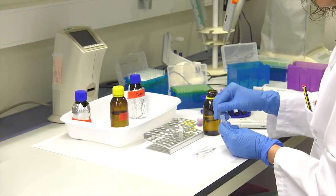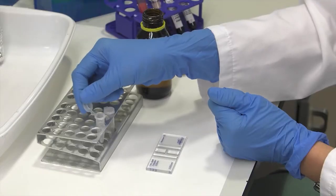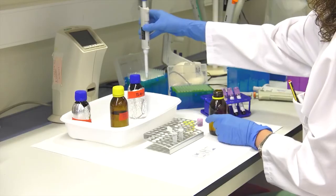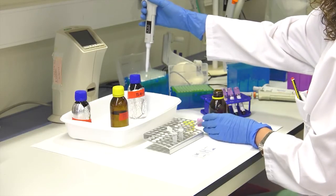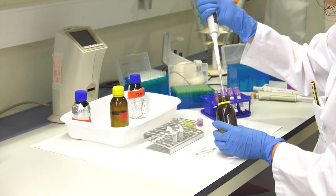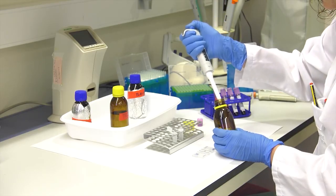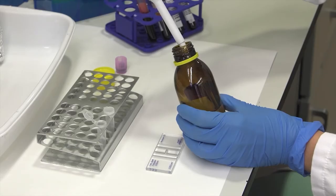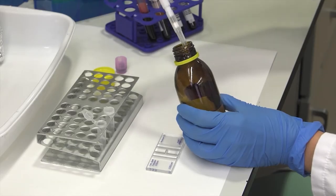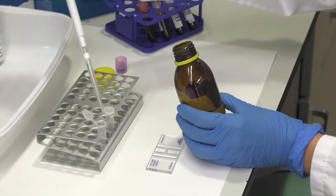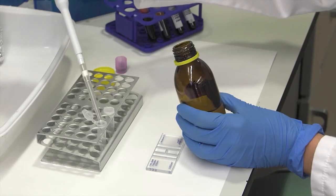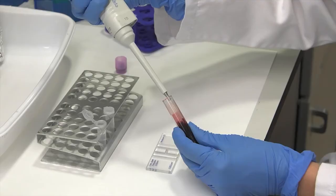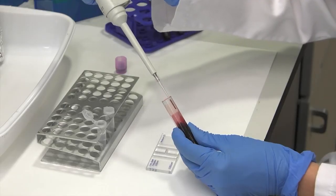To do this, we use the DACIE reagent, an isotonic liquid that prevents cell lysis and contains formaldehyde as a cell fixative and sodium citrate as anticoagulant. In a clean tube, make a 1 to 200 dilution by adding 995 microliters of DACIE reagent and 5 microliters of blood, mixing again gently to homogenize.